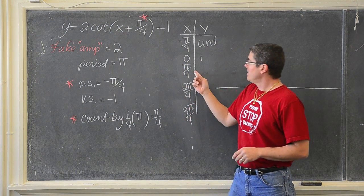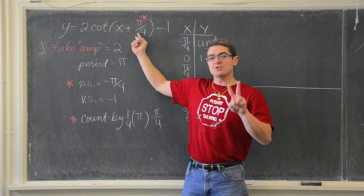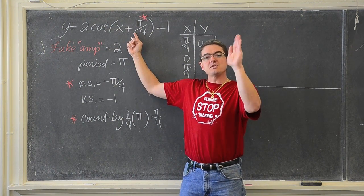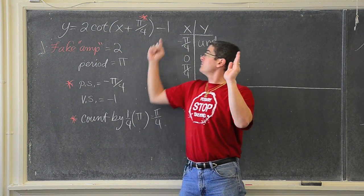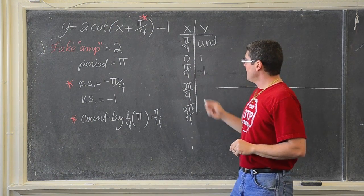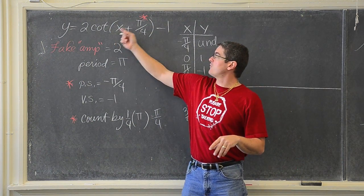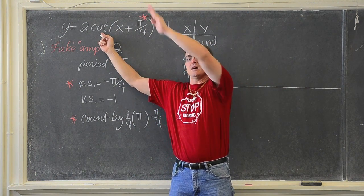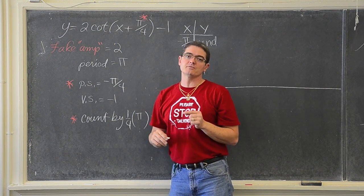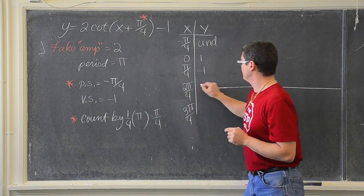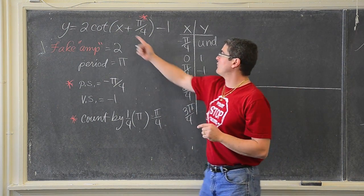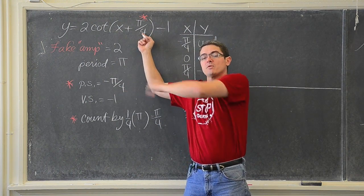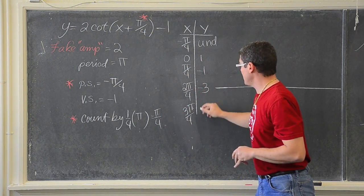We always apply the vertical shift last. At x = π/4: π/4 + π/4 = 2π/4 = π/2. The cotangent of π/2 is zero over one, so zero. Times 2 is zero, then minus 1 gives negative 1. At x = 2π/4: 2π/4 + π/4 = 3π/4. The cotangent of 3π/4 is negative 1, times 2 is negative 2, minus 1 is negative 3. At x = 3π/4: 3π/4 + π/4 = 4π/4 = π. The cotangent of π with y = 0 is undefined.